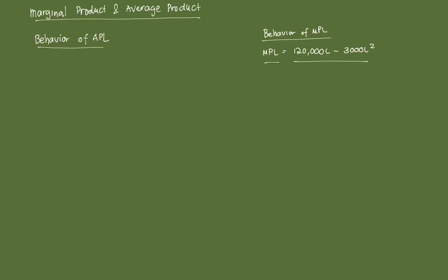Now, in order to understand how these functions behave, it's best to graph them. And in order to graph them, we need to get a sense of their first-order derivatives and their second-order derivatives. Since MPL is the first-order derivative, let's get a sense of the second-order derivative. Let's derive MPL with respect to L — that's essentially the second-order derivative.